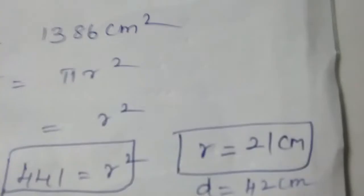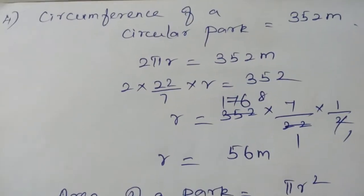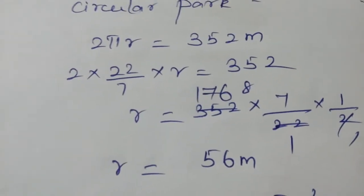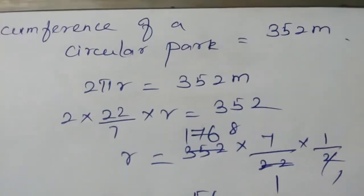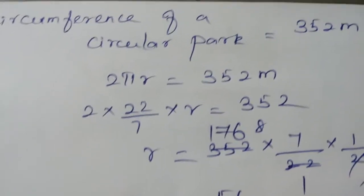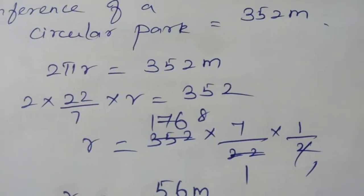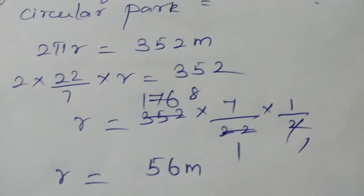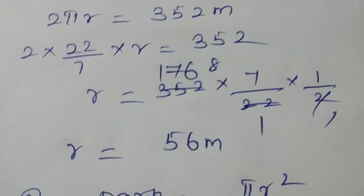The fourth question: the circumference of a circular park is 352 meters. Find the area of the park. The formula for circumference is 2 pi r, so 2 pi r equals 352 meters. That is 2 into 22 by 7 into r equals 352, and our aim is to find r.